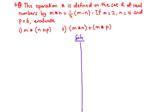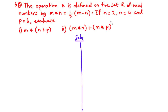From the question, the operation star is defined on the set R of real numbers by m star n, which means that when you combine m and n under the operation star, the rule for the operation gives us 1 over 2 times m minus n. So basically we are going to substitute the values of m, n, and p to solve for parts (i) and (ii).